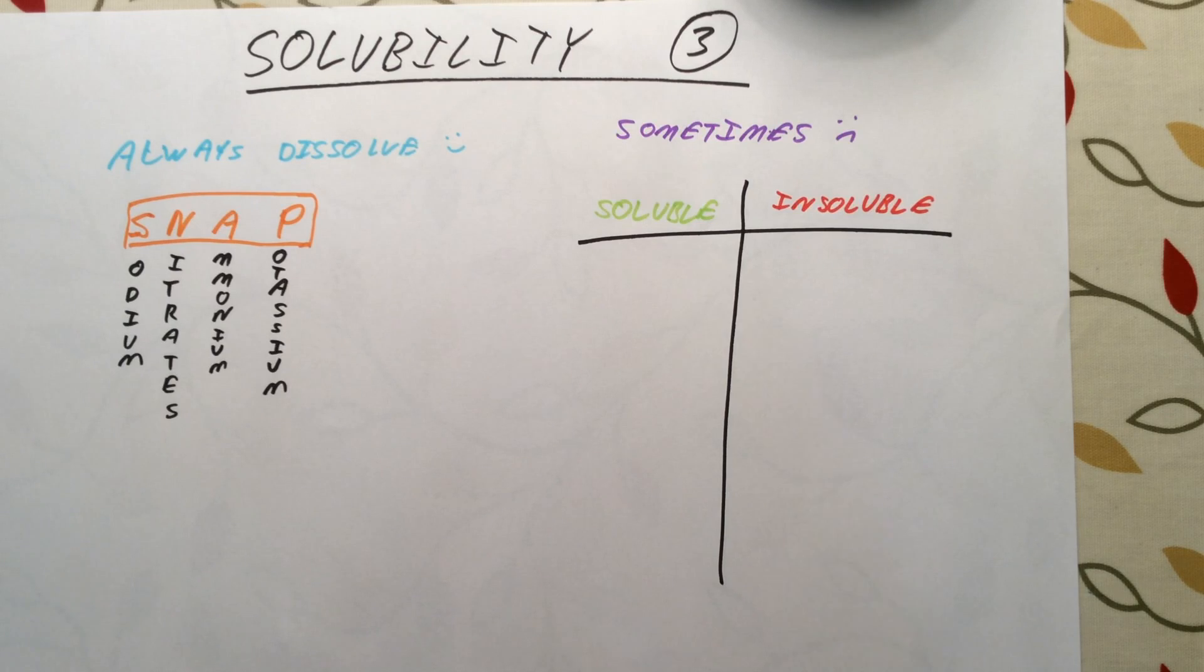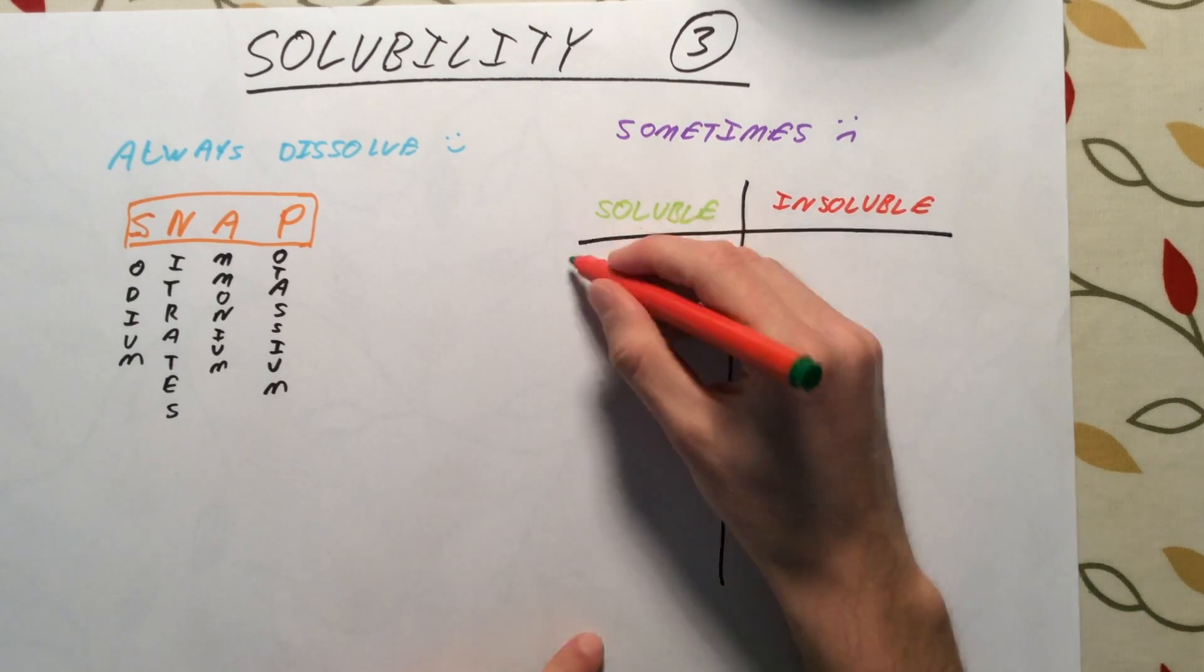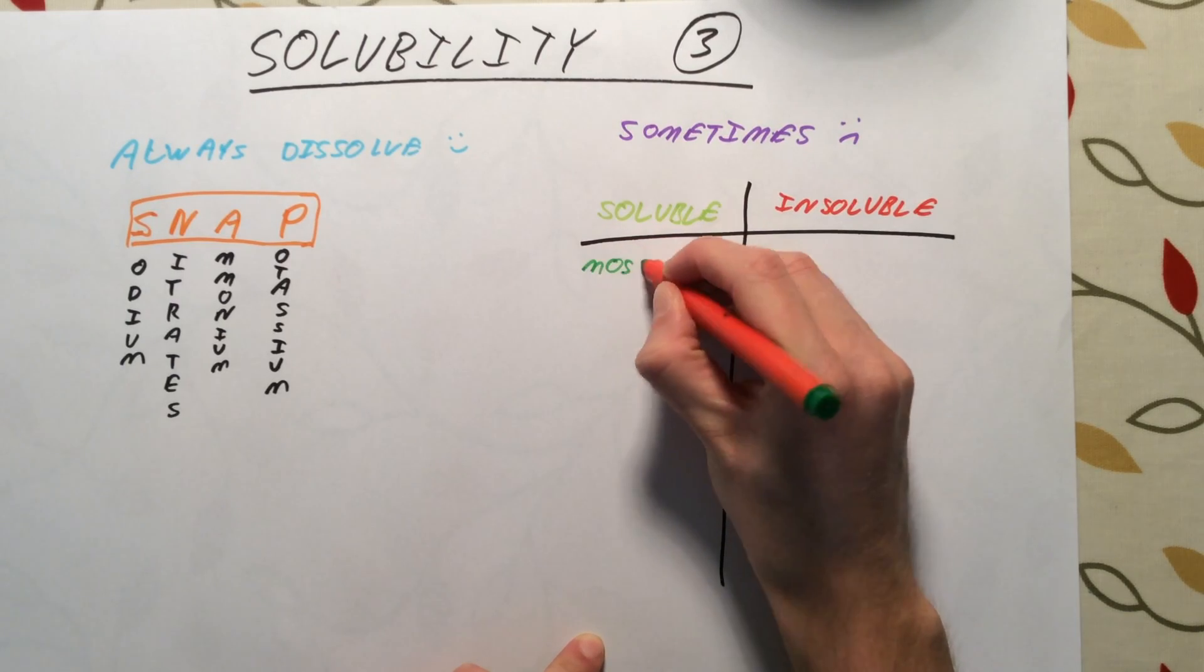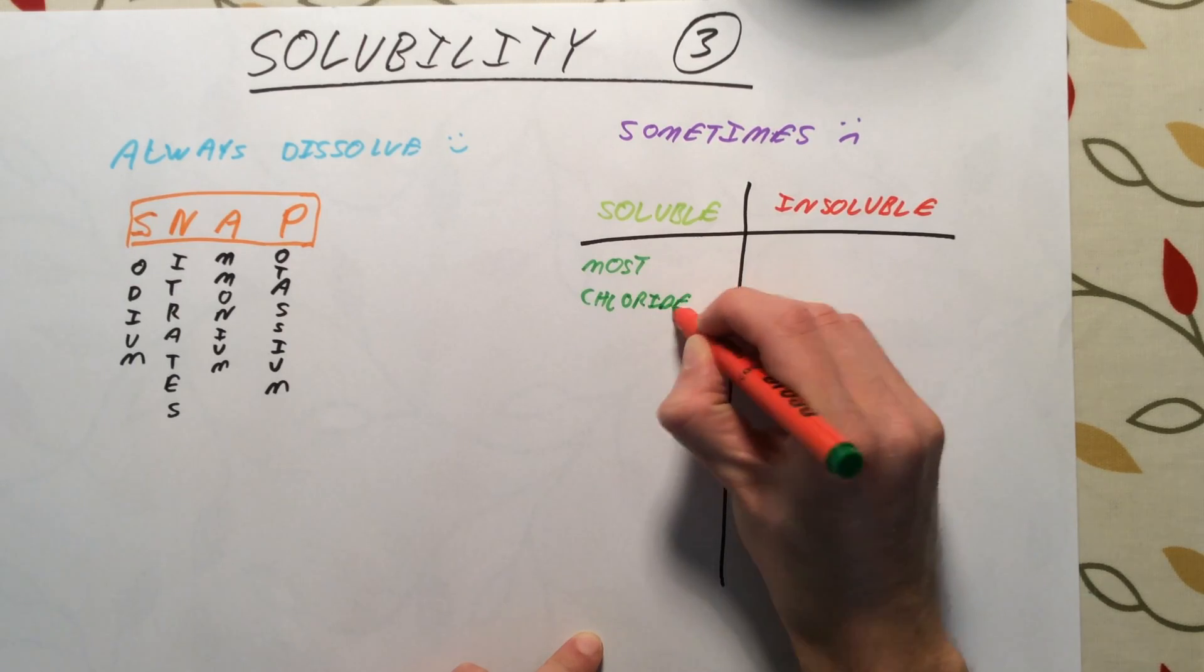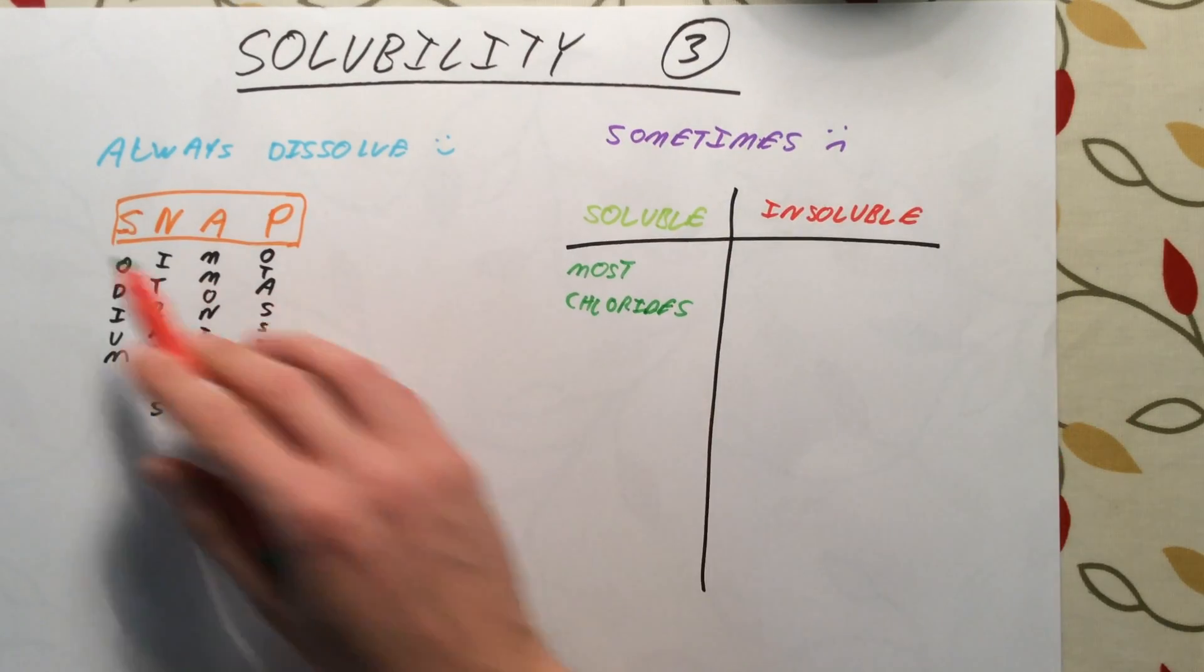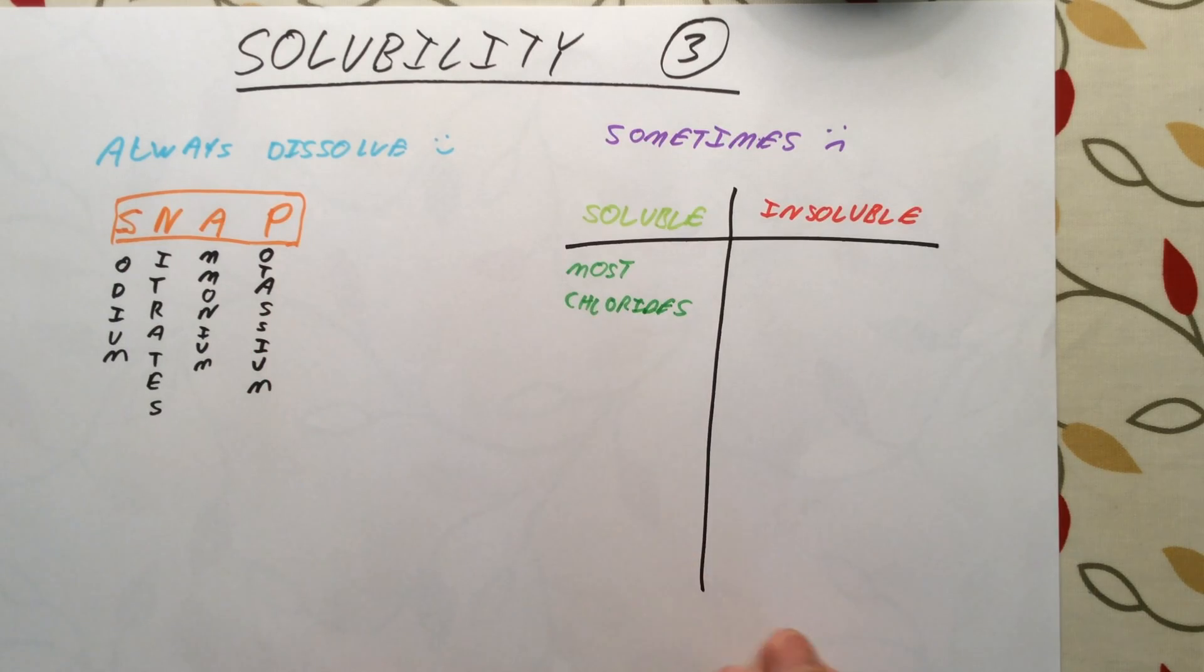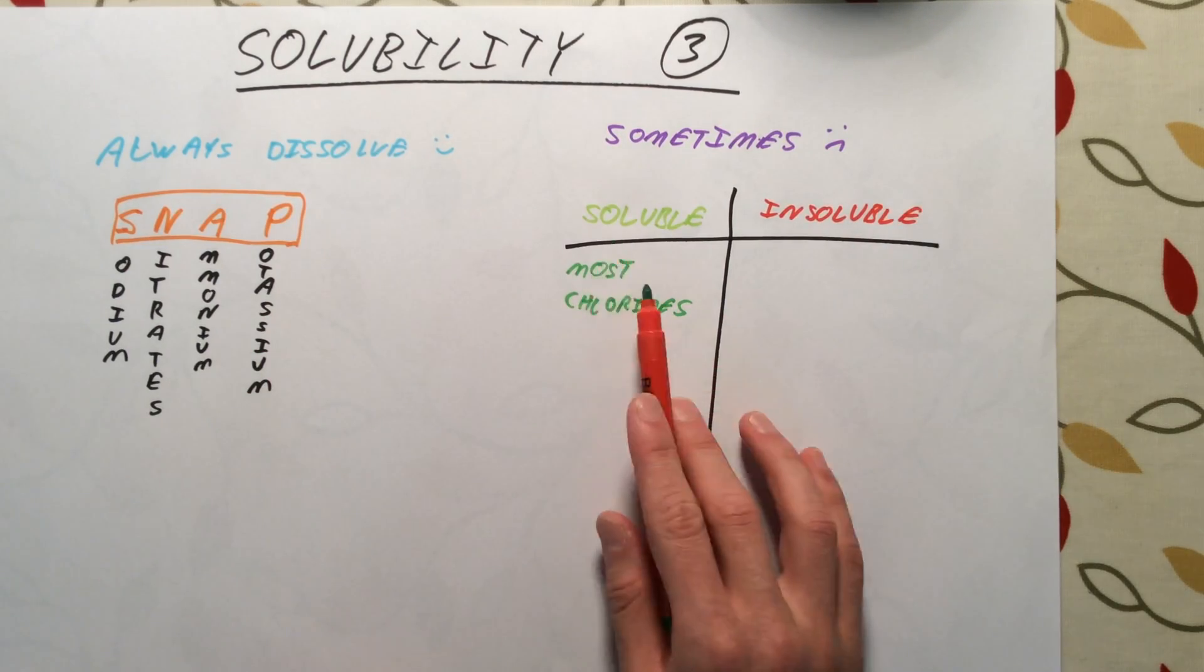The first type of salt that we need to know about are chloride salts. Most chlorides are soluble. Sodium chloride will definitely dissolve, calcium chloride will definitely dissolve, lithium chloride will dissolve. Most chlorides do dissolve.